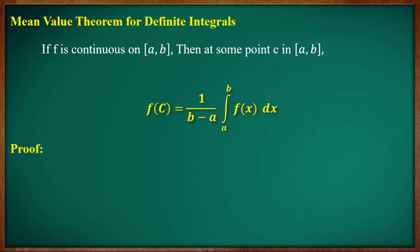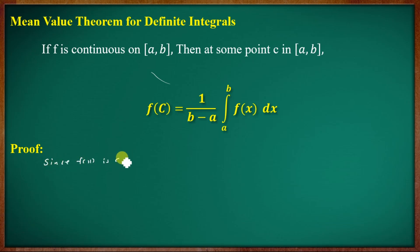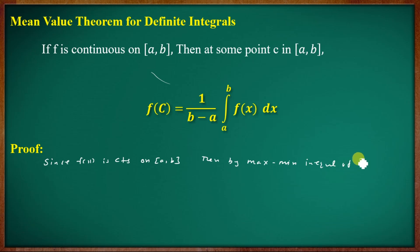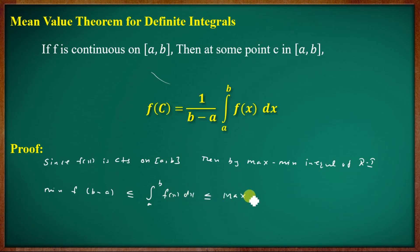If f is continuous on closed interval [a, b], we apply the maximum-minimum inequality for Riemann integrals. By the maximum-minimum inequality, the minimum value of f times (b minus a) is less than or equal to the integral from a to b of f(x) dx, which is less than or equal to the maximum value of f times (b minus a).